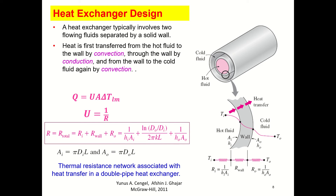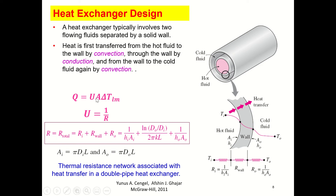This figure shows a shell and tube heat exchanger. Hot fluid flows inside the tube and cold fluid flows inside the shell, so heat transfers from the hot fluid to the cold fluid. The equation Q = U·A·ΔTlm is used to design a heat exchanger, where Q is the heat transfer, U is the overall heat transfer coefficient, A is the area, and ΔTlm is the log mean temperature difference.